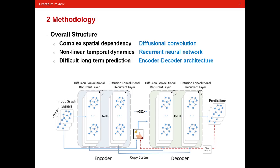To lift these challenges, the paper introduced several procedures. And here is the overall structure. To fix the complex spatial dependence, the diffusion convolution is introduced. And then the recurrent neural network is used to model the non-linear temporal dynamics. And at last, encoder-decoder architecture is used to boost the traffic prediction performance and deal with the long-term prediction problem. Now let's have a closer look at each part of this paper.